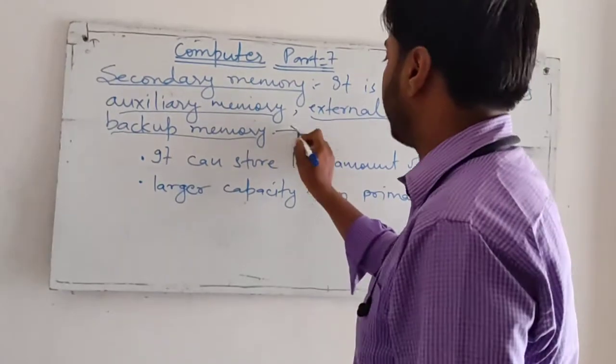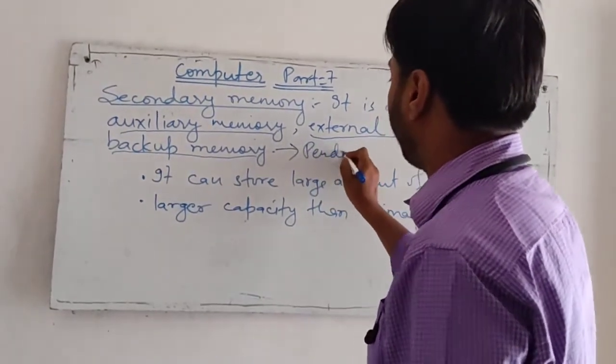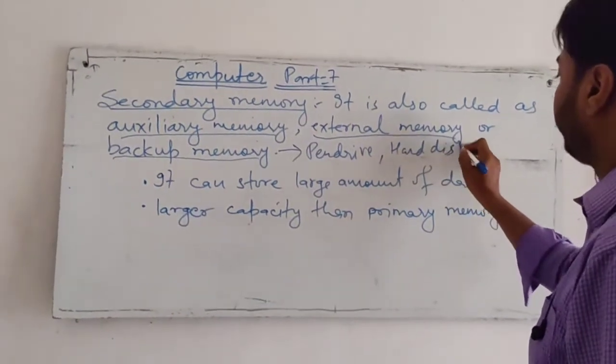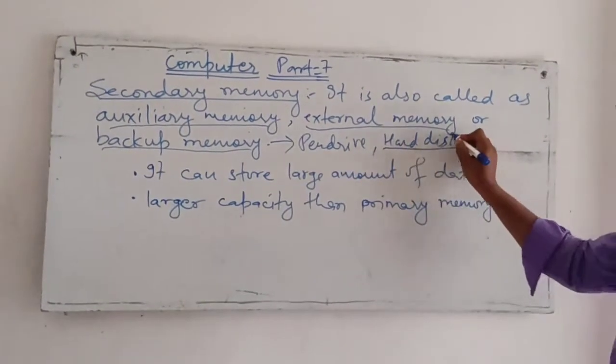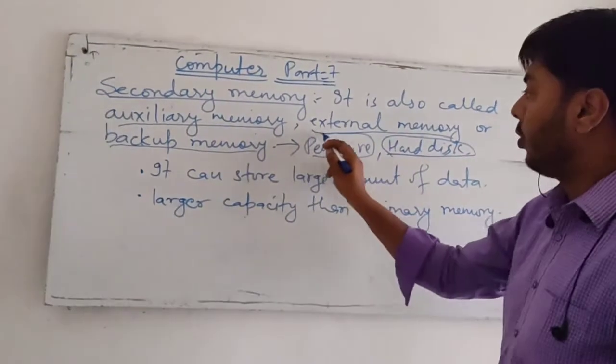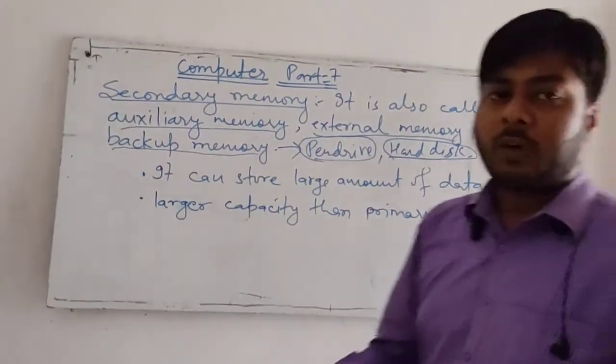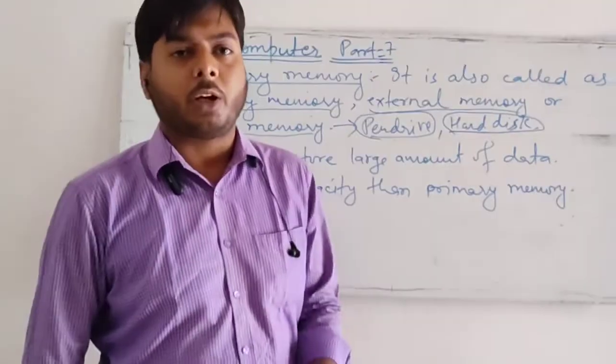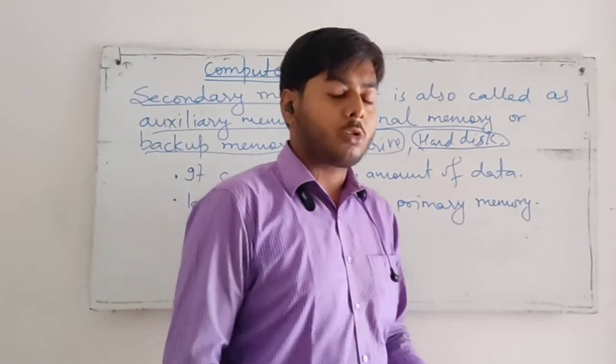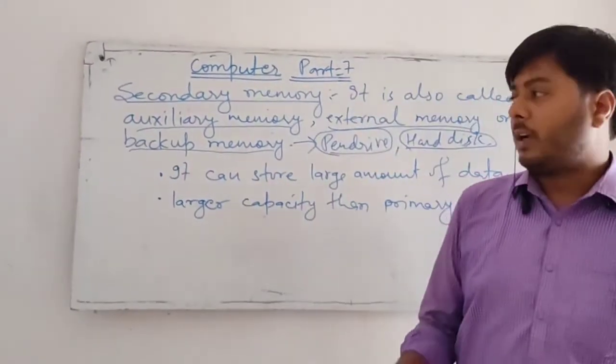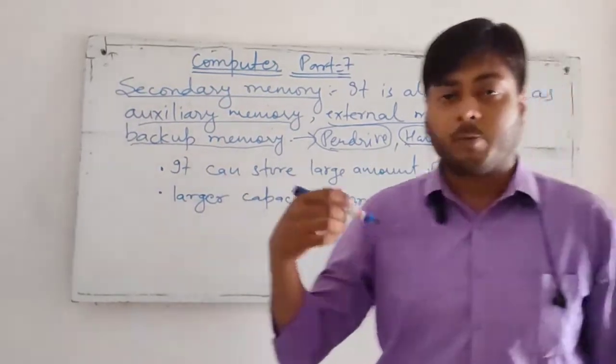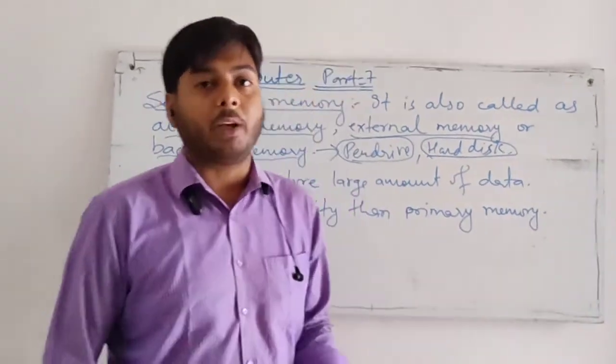Here I will give you some examples. First one is pen drive and hard disk. Hard disk is used in computer and pen drive is used to transfer the data from one computer to another computer. You all know that secondary memory has more memory than primary memory.